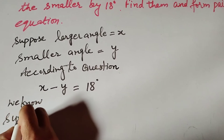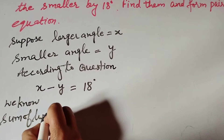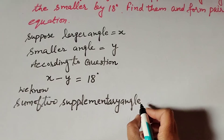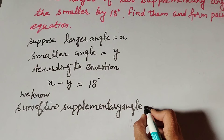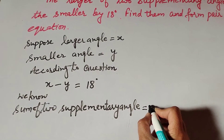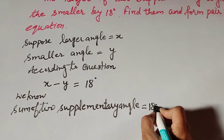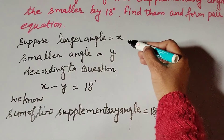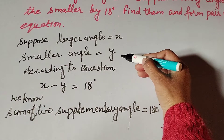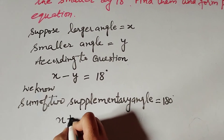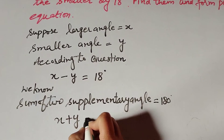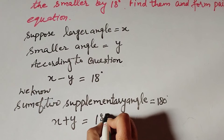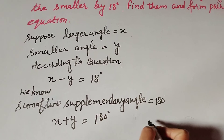We know that the sum of two supplementary angles is equal to 180 degrees. So, with one angle x and the other angle y, we get x plus y equals 180 degrees.